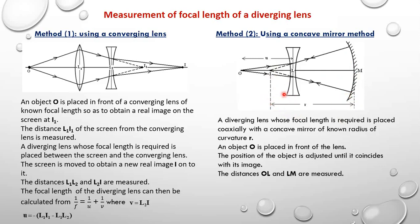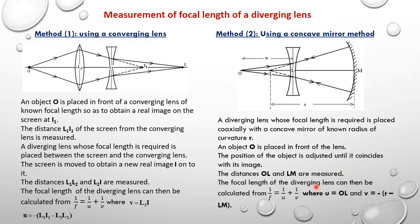We need the image distance I–L as V, obtained as R minus L–M. This distance is negative because the image is virtual — the rays do not actually converge there. We substitute U = O–L and V = −(R − LM) into the lens formula 1/F = 1/U + 1/V and solve for F.